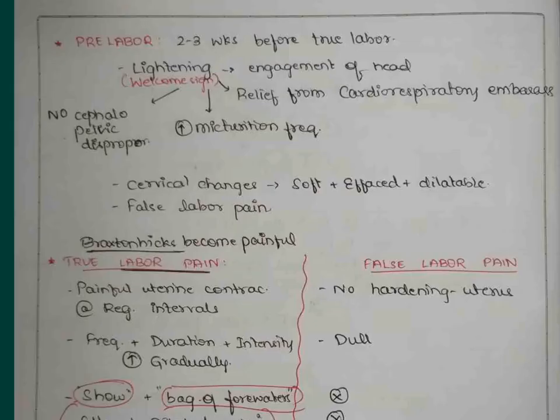Coming to pre-labor, pre-labor is the period which is two to three weeks before the true labor. In this period there are three changes: first is the lightening, second one will be the cervical changes, and third will be false labor pain, which is also noticed in the pre-labor period. Lightening is a welcome sign wherein it indicates that the head gets engaged. In lightening, what happens is that there is engagement of the head taking place and due to effacement of the cervix - that is, taking up of the cervical part and attaching to the lower uterine segment - there is dilation of the cervix taking place. As a result, the fetal head descends down and undergoes engagement.